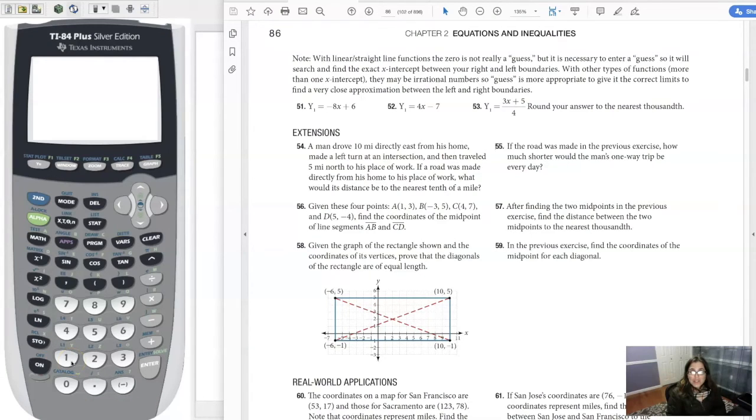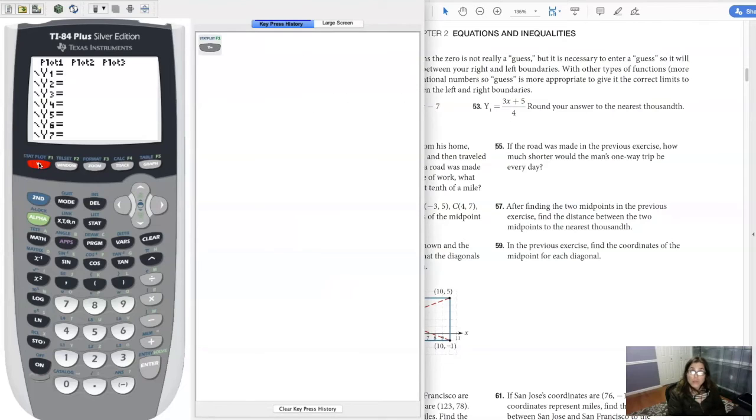Hey, Math 31, I want to finish up section 2.1, number 53. So if we take a look at this, if we want to find our x-intercept, the first thing we want to do, if we want to use our graphing calculator, is go to your y equals screen and type in 3x plus 5 over 4. Now, since 3x plus 5 is in that numerator and it's a binomial, we want to protect it with parentheses. So I'm going to write 3x plus 5 in parentheses and divide it by 4.